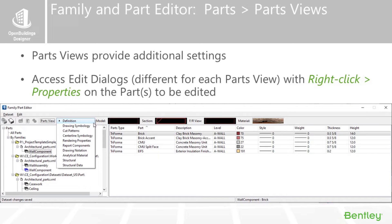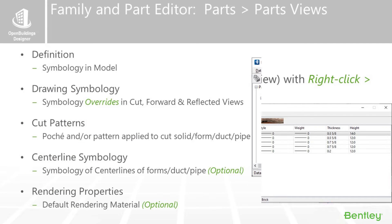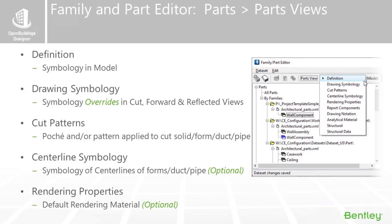To access the dialogue box within the Family and Part Editor, there are a couple of ways to get to it, which we'll be showing in some videos. Basically, we have these different views of the parts that we'll be going through as well. We call this the definition of a part — that's from the top pull-down in the Family Part Editor — which is the symbology in the 3D model.